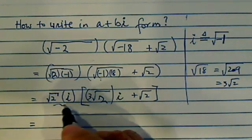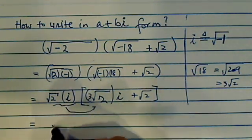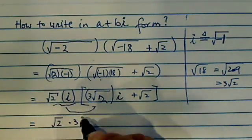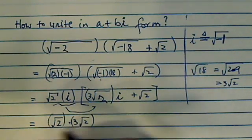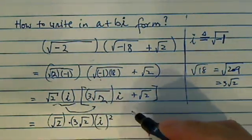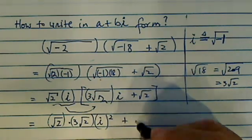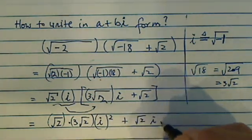Now let's distribute it in here. This one distributed means radical 2 times 3 radical 2, and then it's i squared because it's i times i, and then plus radical 2 i times radical 2.